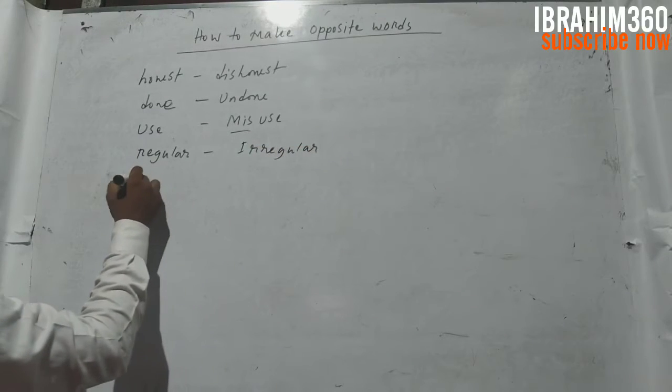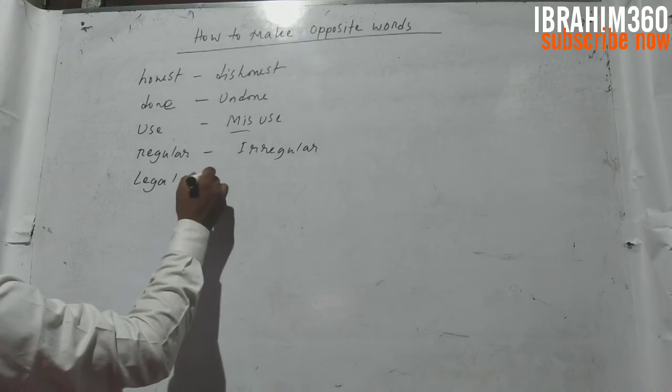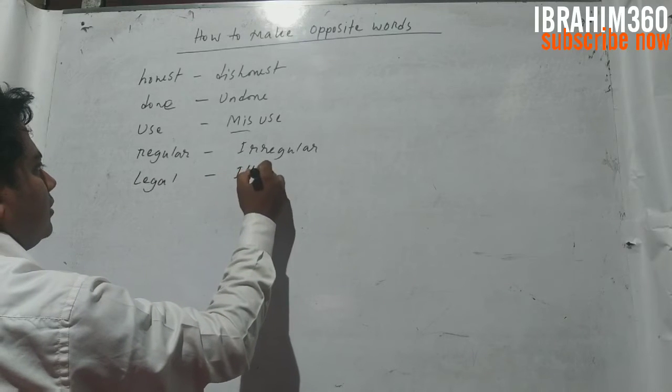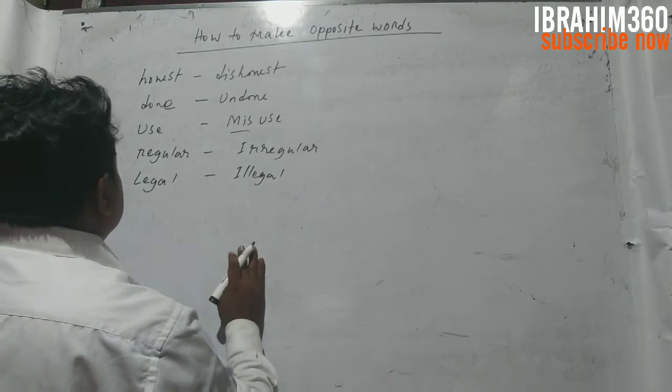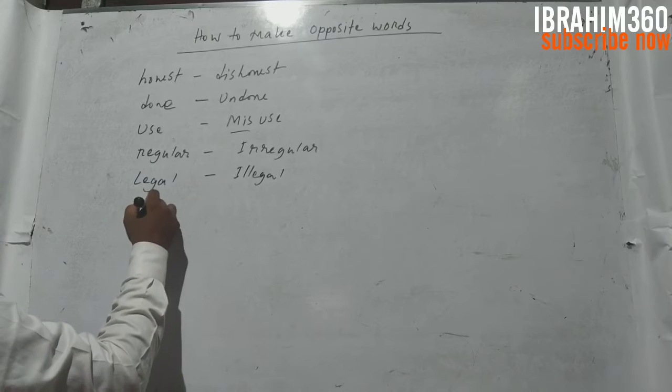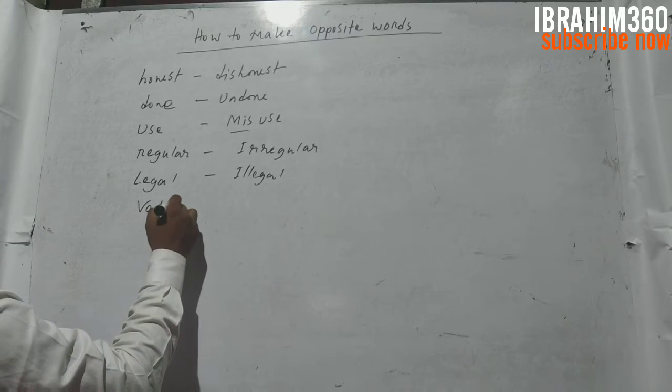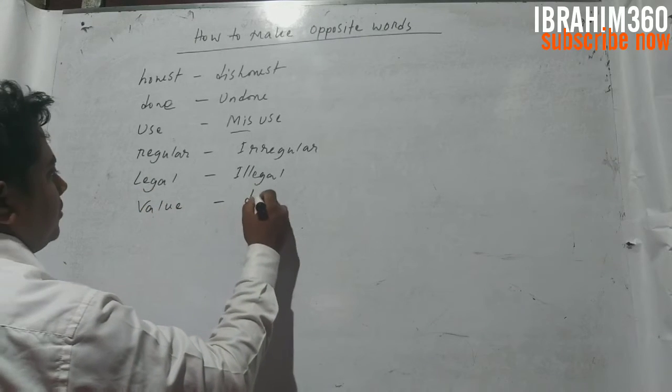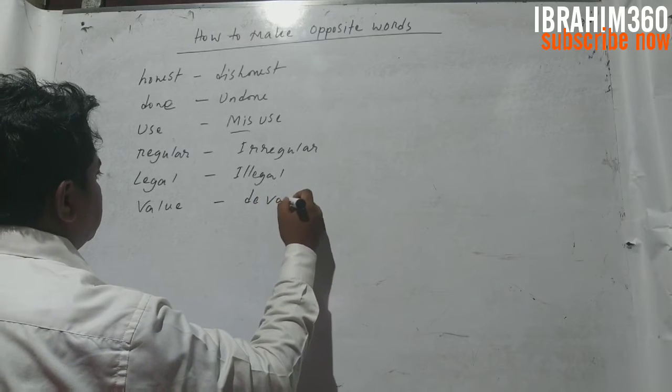Emni babay jodhi ekta shabda doya hai javan legal, ehto bipurit shabda ki hobe? Illegal. Emni babay jodhi amader ke ekta shabda doya hai value, emni babay jodhi amader bipurit shabda korte paree, devalue.